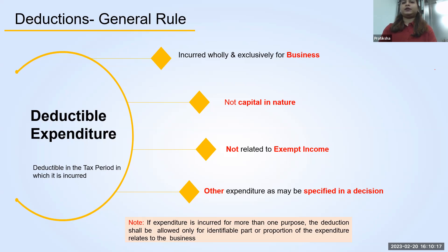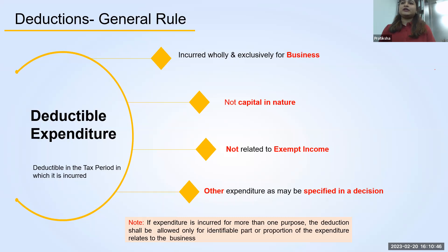We will be speaking about the expenses which are deductible and computation of taxable income and corporate tax. The expenses which are incurred exclusively for the business in the tax period are allowed to be deducted. The expenses which are revenue in nature are deducted. If you have spent any expenses in purchase of your fixed assets, which is capital in nature, it will not be allowed as a deduction in the current year. But this expense will be allowed as a deduction in the later years in the form of depreciation.